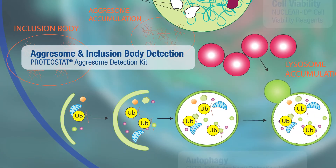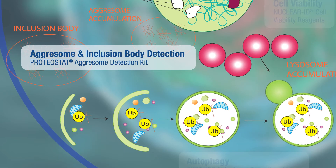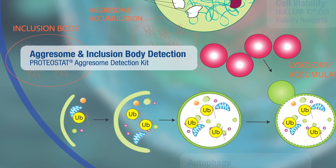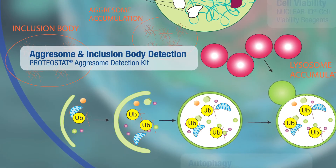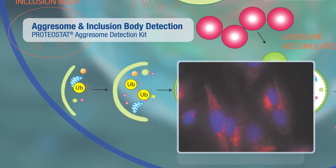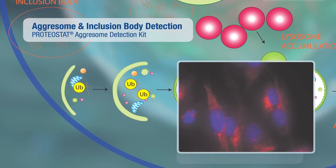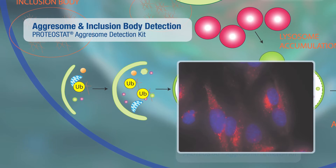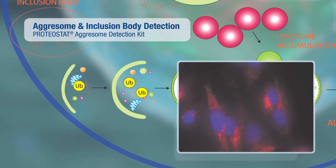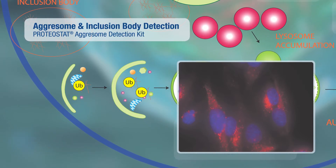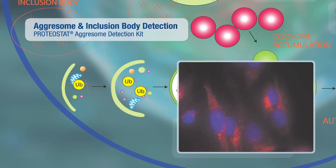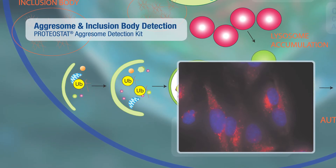Pathological inclusion bodies containing aggregated proteins are characteristic of various neurodegenerative diseases. Enzo's Proteostat agrosome detection kit provides a sensitive cell-based assay to easily identify agrosomes and agrosome-like inclusion bodies without requiring non-physiological protein mutations or genetically engineered cell lines.